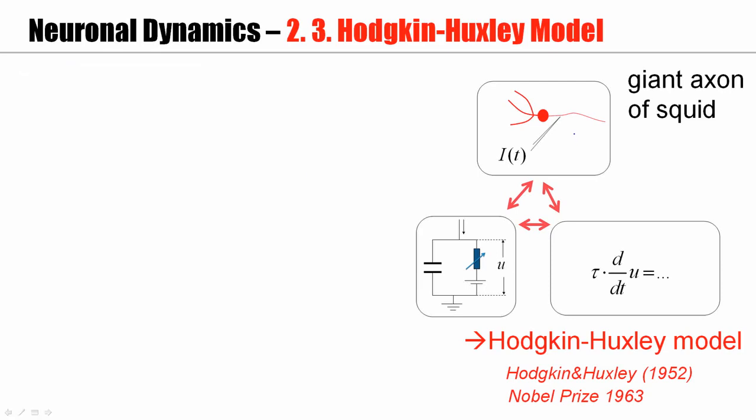they could deduce a model description. Thus, they went from their experiments first to an equivalent electrical circuit and then to a mathematical model, which I will introduce now.